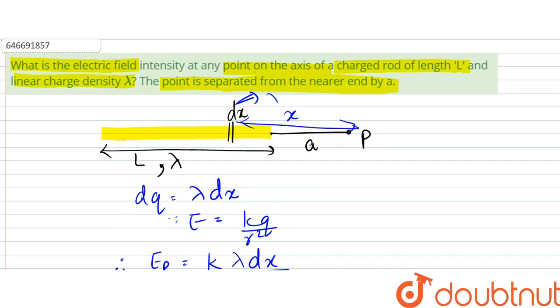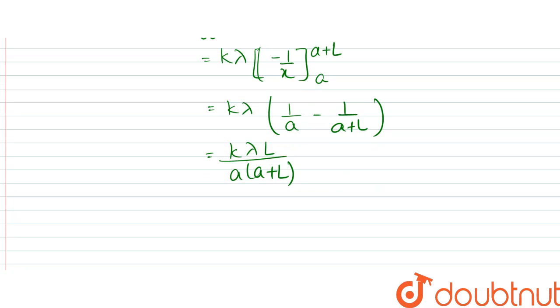The point is separated from the nearer end at A distance. So this would be the amount of electric field at point P. That is the answer. Thank you.